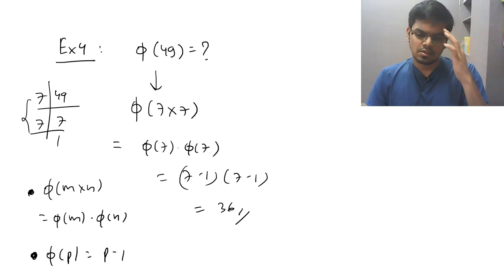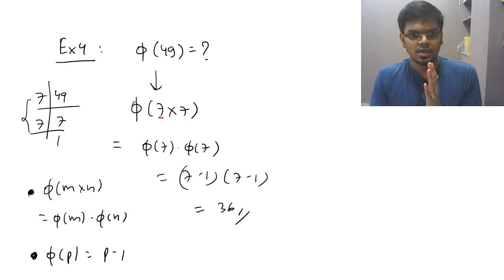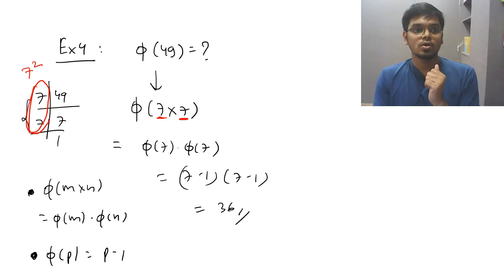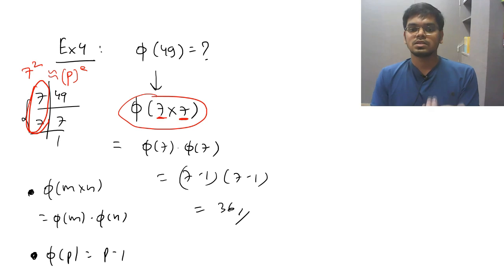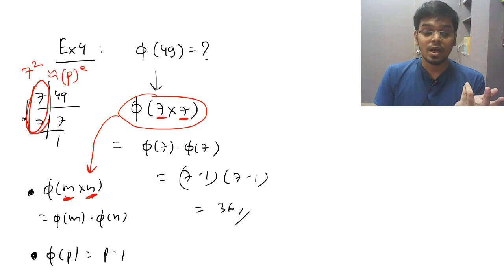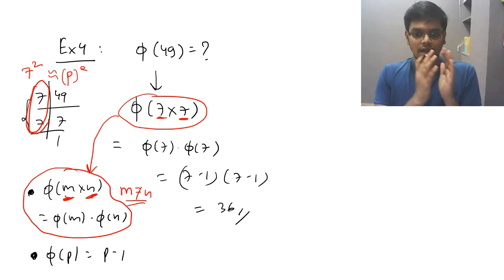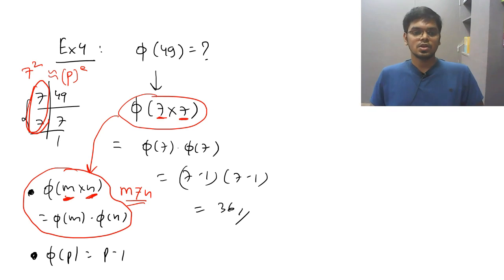The mistake here is splitting the same prime number — 7 times 7 — and applying the multiplicative property. You have to club the same prime numbers together: 7 squared is of the form p to the power e. The property phi of m times n equals phi of m times phi of n can only be used when m is not equal to n. When m equals n, you cannot use this formula.